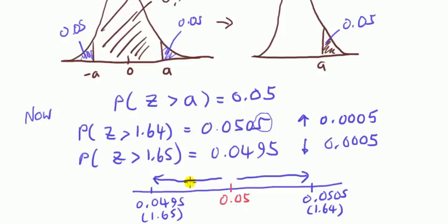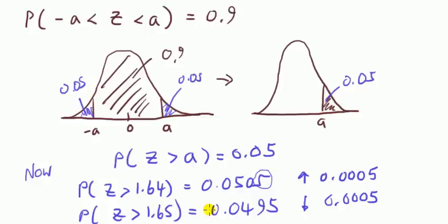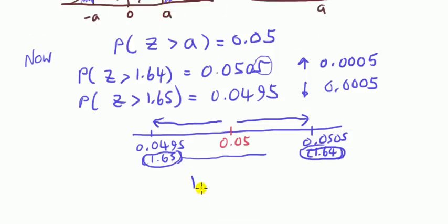We could take the percentage points and do the same thing. We could say, let's just take the halfway point between 1.64 and 1.65. I just take the average. And if I did that, that would give me 1.645.